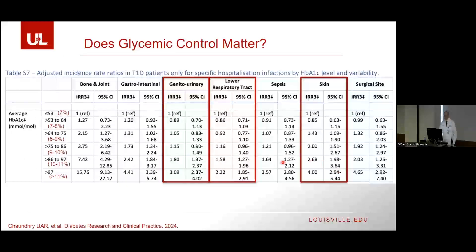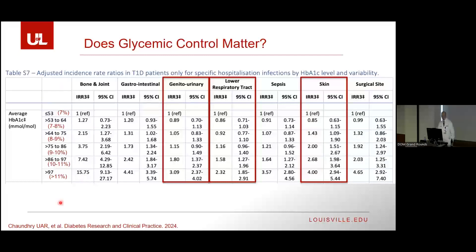Looking at specific types of infections — bone and joint infections, which we'll revisit with diabetic foot infections — poor hemoglobin A1c is associated with very high incidence rates. But the rates are also high for genitourinary infections, respiratory infections, and skin and soft tissue infections.